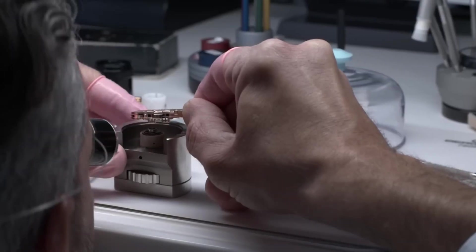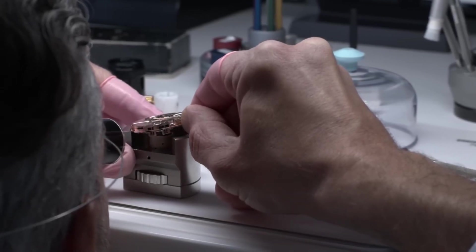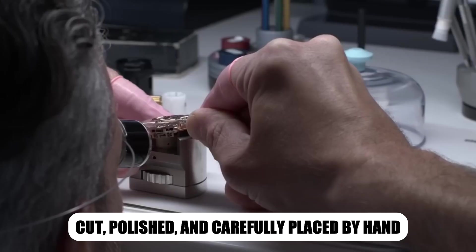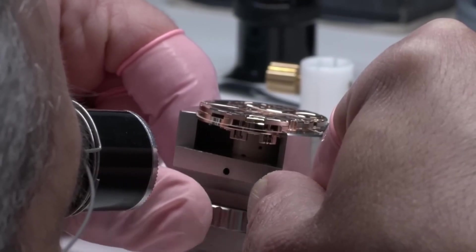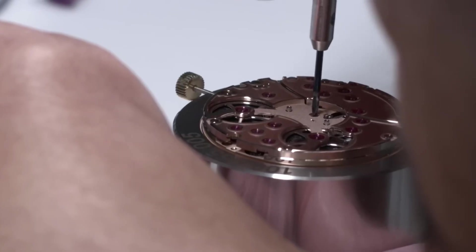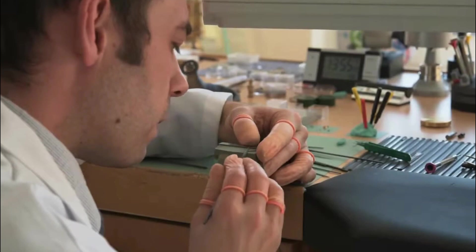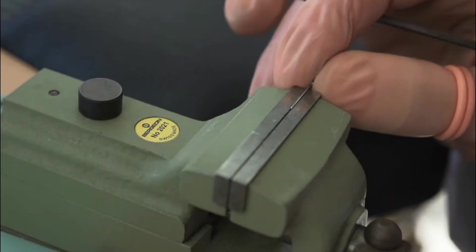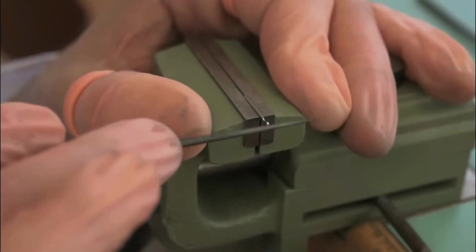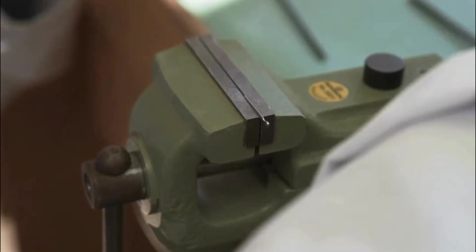Applied indexes, those tiny hour markers, are cut, polished, and carefully placed by hand. Each one must align perfectly, because even the slightest misstep disrupts the balance of symmetry. Then come the hands, crafted with razor-thin profiles, yet strong enough to endure decades of motion. Their surfaces are polished until they catch light at every angle, transforming a practical tool into a statement of elegance.